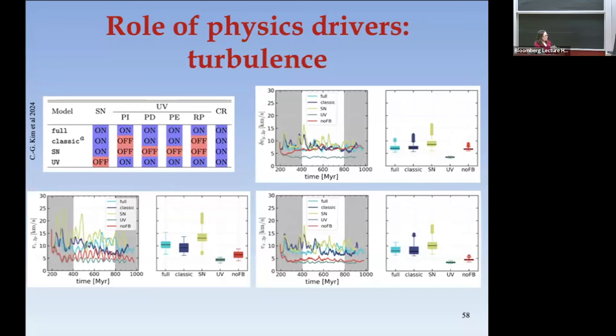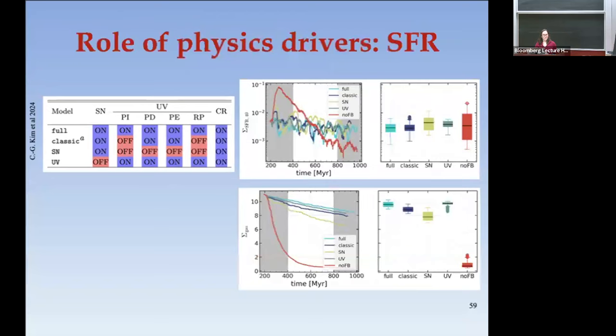No feedback might look innocuous — you still get 7 km/s — but if you look at it, it's completely unrealistic. The no-feedback simulation has an extremely high star formation rate, completely unlike any observed galaxy, using up all the gas down to a surface density of 1 solar mass per square parsec. So feedback is clearly important — if you run a galaxy with no feedback you will not get anything realistic.